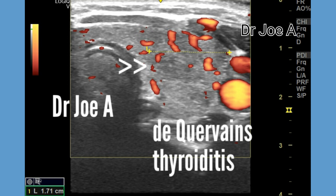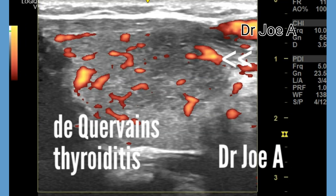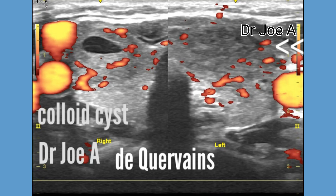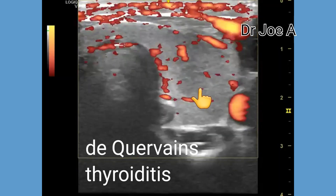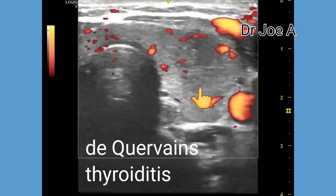De Quervain's thyroiditis is an inflammatory condition affecting the thyroid gland in this patient. It is characterized by pain and tenderness in the left lobe, along with fever and an elevated ESR.